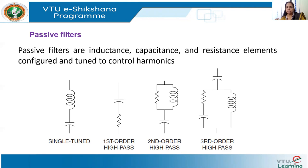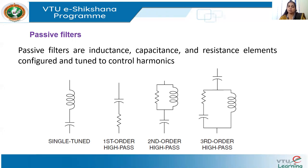Passive filters are commonly used because they are very simple in structure and inexpensive compared to other means of harmonic mitigation. However, they have some disadvantages. They potentially interact with the power system and can have adverse effects. So before designing a passive filter, it is very important to see all possible system interactions — for instance, if you have a capacitor bank or other elements — to check all possible effects on the power system before they are employed.